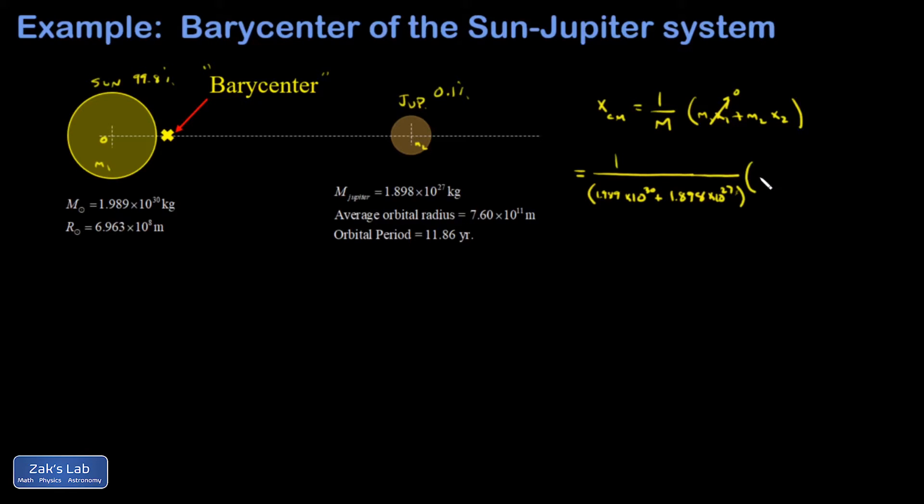So m2 is 1.898 times 10 to the 27 kilograms. And then multiply by x2. And that's the average orbital radius here. That's the average distance from the Sun. That's 7.60 times 10 to the 11th meters.